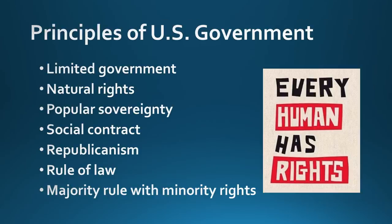Let's start at the beginning with some basic principles of U.S. government. So you have this list of seven terms. Things like limited government — that's the idea that the government is limited in nature. It means that the government can only do what the constitution allows it to do. It can't go beyond that.